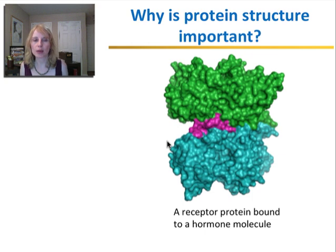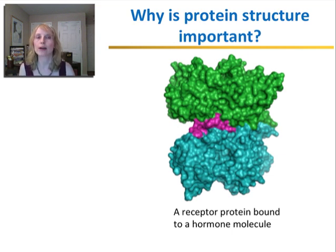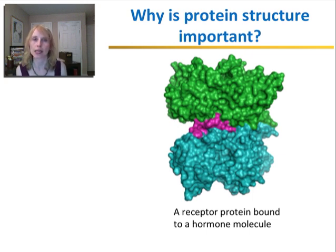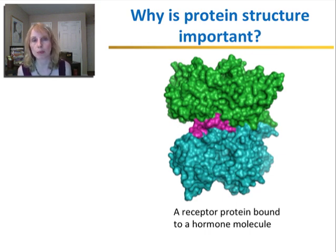In the example shown in this picture, in pink there is a hormone molecule which is bound to a receptor protein. The way your cells perceive hormones is that these receptors have to bind to them to carry out a certain signal. So the shape of the hormone and the shape of the receptor have to match exactly, just the way a lock has to fit a certain key. If the hormone does not fit this little groove in the receptor, then the cell will not be able to recognize it.